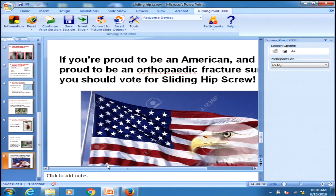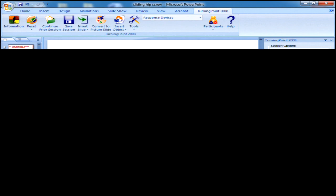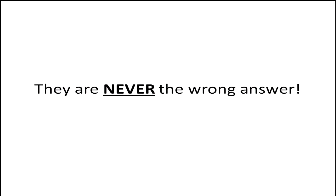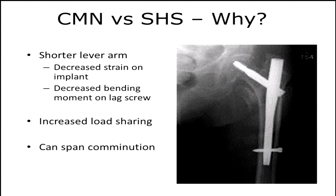Derek is going to tell you why you should vote for the nail. That's a hard act to follow. I don't actually disagree with anything that Susan said — if you do surgeries technically correctly, you will probably have a good outcome the majority of the time. But done correctly, a nail is never the wrong answer for an intertrochanteric hip fracture. You have a short lever arm, decreased strain on the implant, decreased bending moment, a load-sharing device, and you can span comminution. So it makes sense to use that.